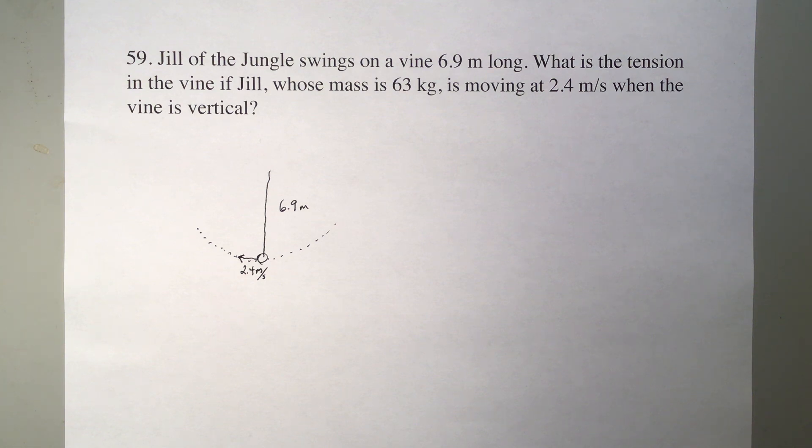And this is in circular motion questions. Jill of the jungle swings on a vine 6.9 meters long. What's the tension in the vine if Jill, whose mass is 63 kilograms, is moving at 2.4 meters per second when the vine is vertical?